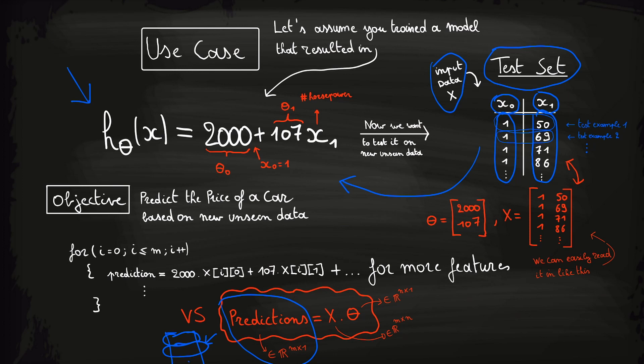So to summarize, we get the benefit that we can write clean, understandable code in much fewer lines of code. But additionally, it might also be computationally more efficient than using loops. A lot of programming languages have very optimized linear algebra libraries that can compute these multiplications very efficiently.